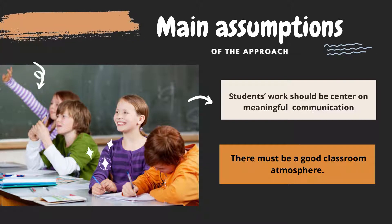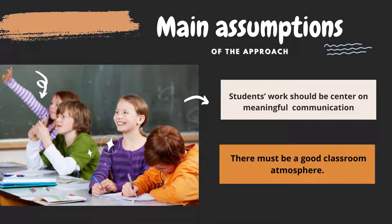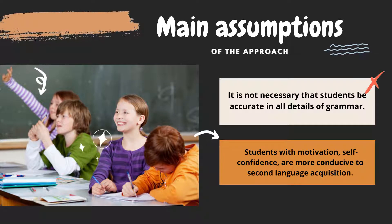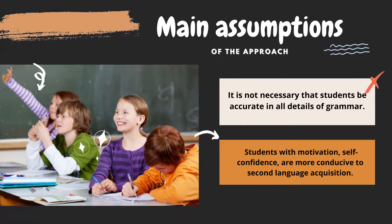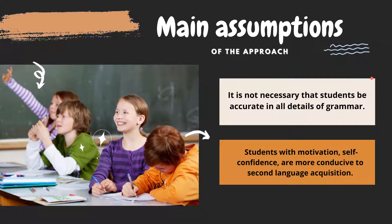You have to consider the main assumptions of this approach. First, students' work should be centered on meaningful communication rather than on form. There must be a good classroom atmosphere. Students should be able to make the meaning clear but not necessarily be accurate in all details of grammar. Content selection should aim to create a low-affective filter. Students with motivation, self-confidence, and low classroom anxiety generally do better and are more conducive to second language acquisition.